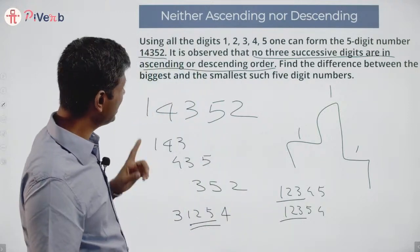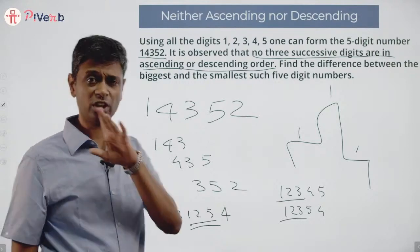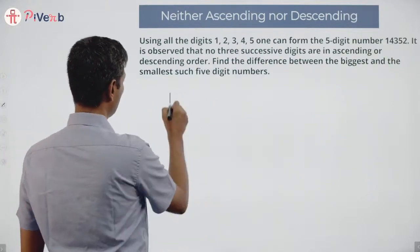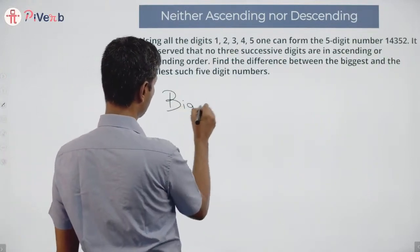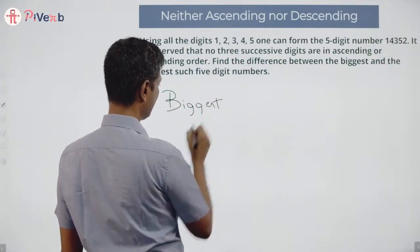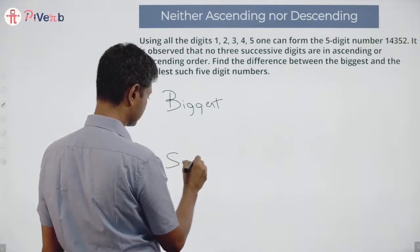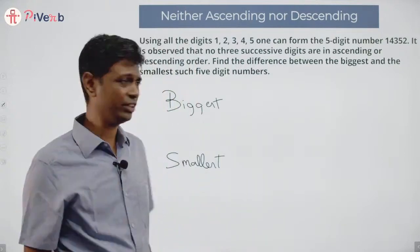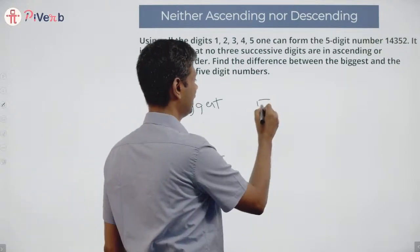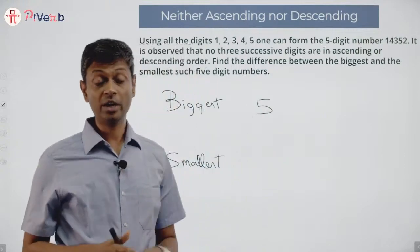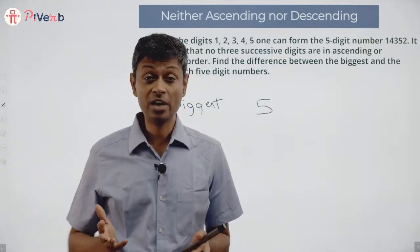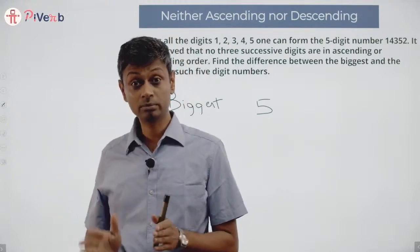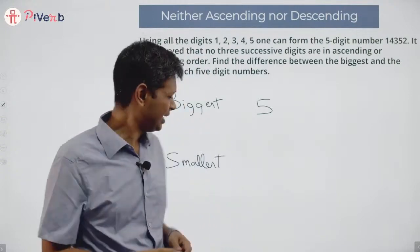Find the difference between the biggest and smallest such five-digit numbers. For the biggest, I should start with 5. I have digits 1, 2, 3, 4, 5 to work with. I want the number to be large, so I'll try starting with 5.